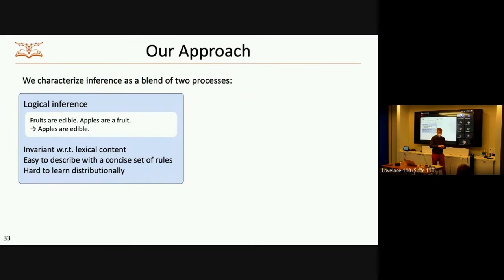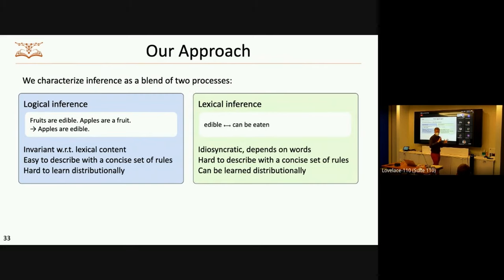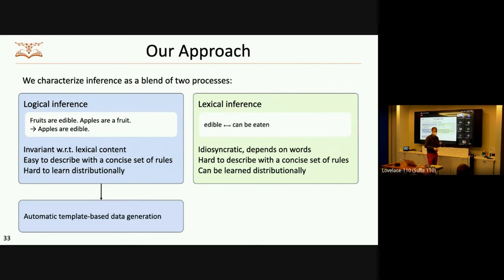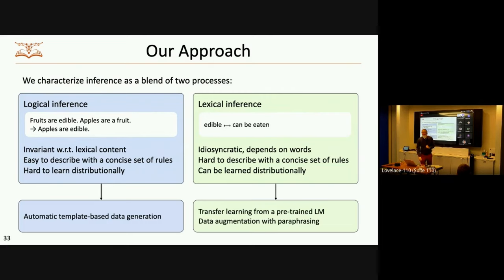There are two aspects I'll touch on here. First, how can we get data for this? If you believe in the capabilities of large pre-trained models, this kind of operation seems possible if we have appropriate training data. And second, how can we chain these inferences together and do multiple steps of reasoning? We think about this kind of inference as blending two processes. There's the logical piece: 'things of X have property Z, things of Y are of type X, therefore things of Y have property Z' — a very abstract logical inference that doesn't depend on the lexical content. Conversely, you also have lexical inferences: in the previous example we went from 'can be eaten' to 'are edible.' This is really hard for systems like theorem provers, and any formal semantic representation typically won't make it easy to unify these two concepts.